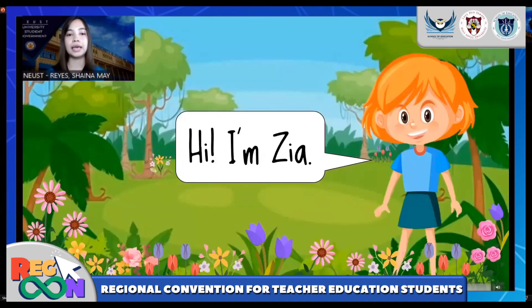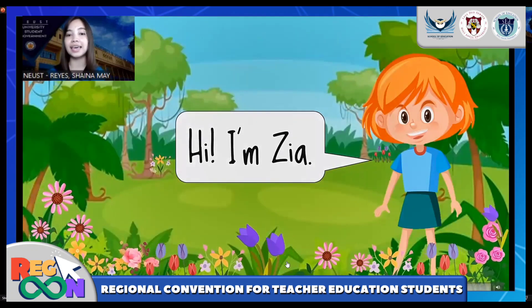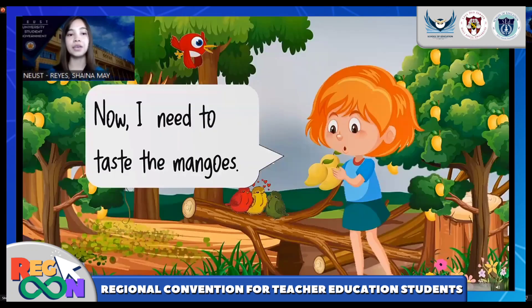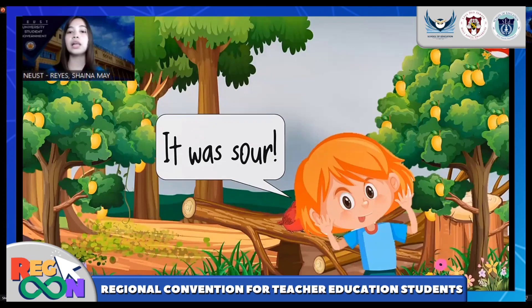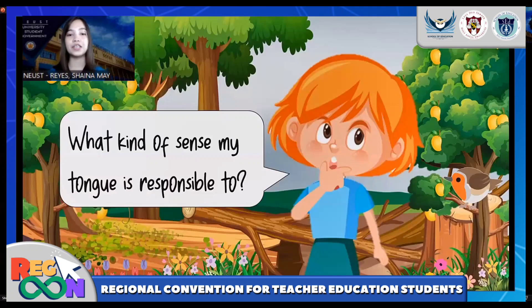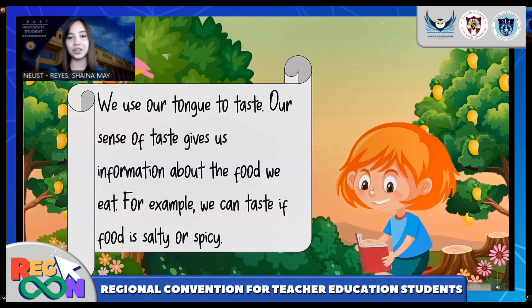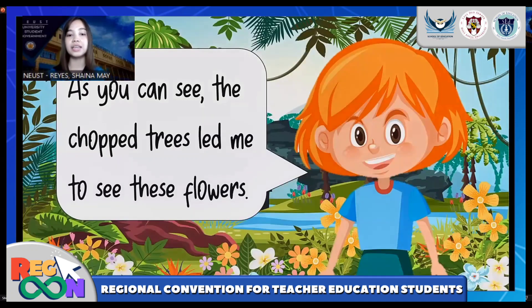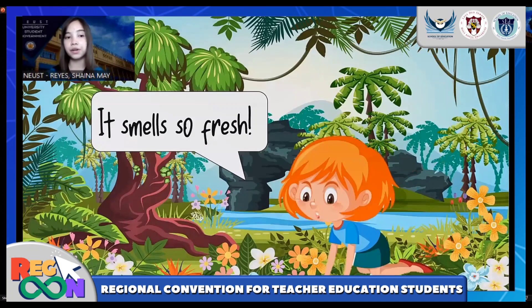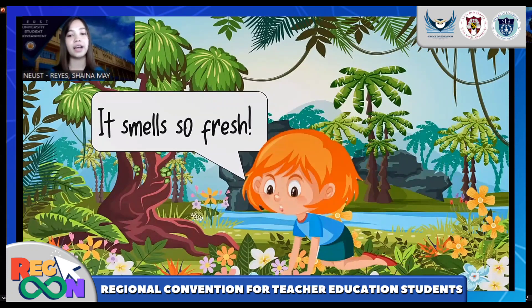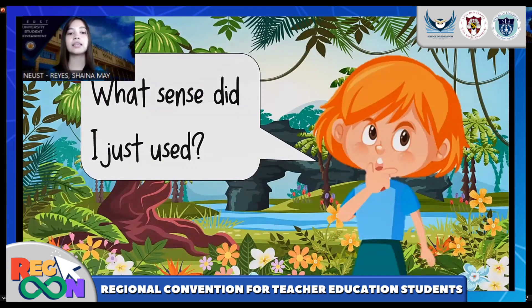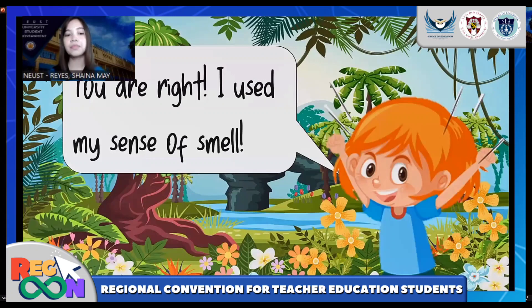The second part of our AEIOU technology-based IM is the lesson proper. Lesson proper is an activity that engages students in gaining knowledge. This part helps students understand the lesson and effectively transfer learning. We designed this part of our instructional materials to be lively, colorful, and enjoyable. Knowing that Grade 3 learners are visual, auditory, reading or writing, and kinesthetic learners, we make sure to address their needs and interests. We make our presentation livelier for visual learners and almost bring the character into life. We put many elements so students can imagine they are with SIA, our little adventurer.